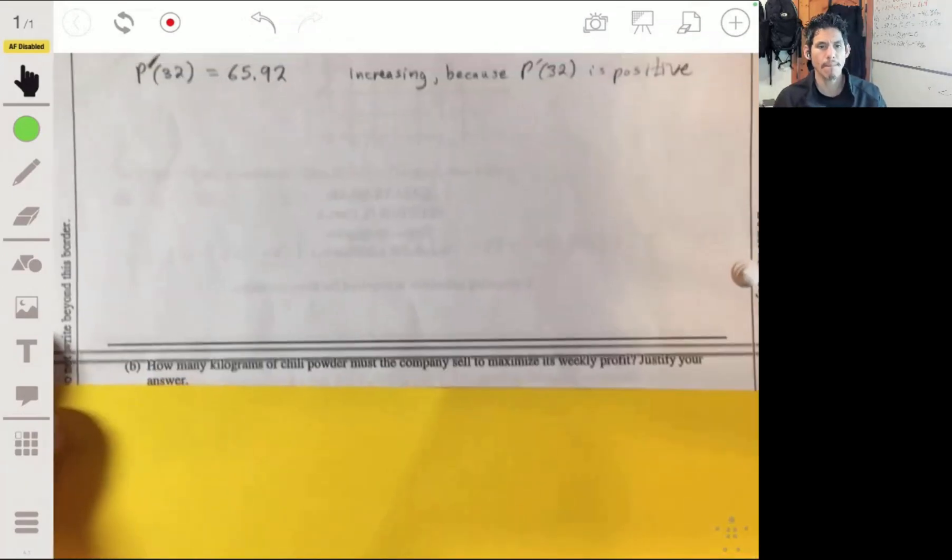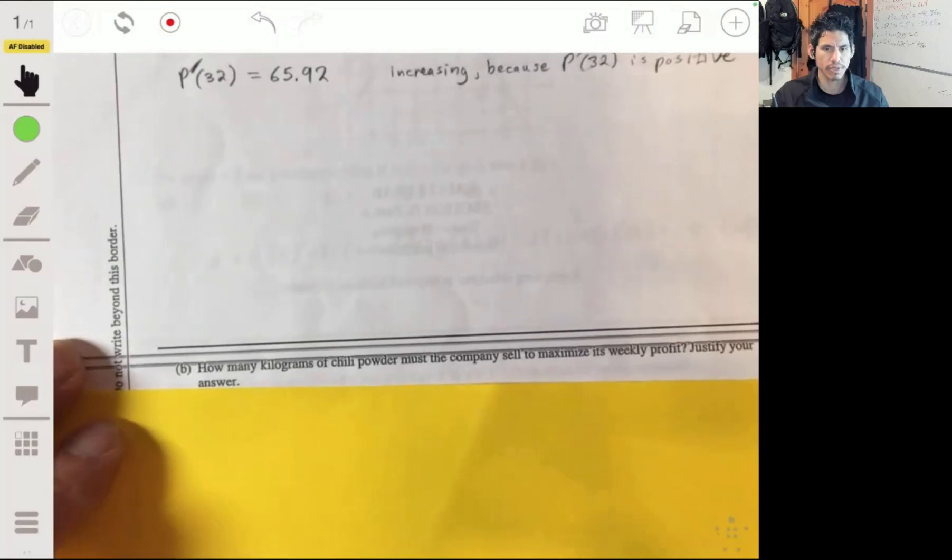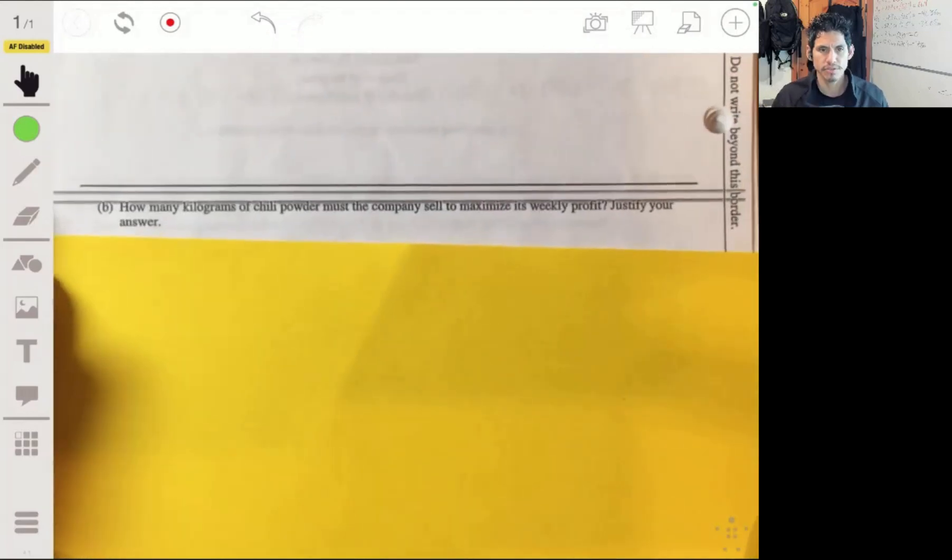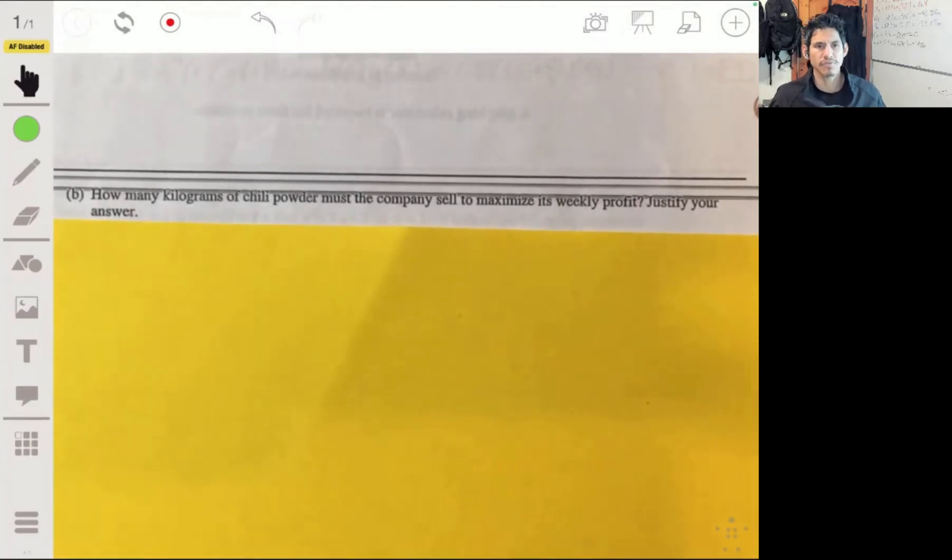Part B: How many kilograms of chili powder must the company sell to maximize its weekly profit? Justify your answer. We want to see where the rate of change of the profit is going to change from positive to negative. Where is it going to be zero?